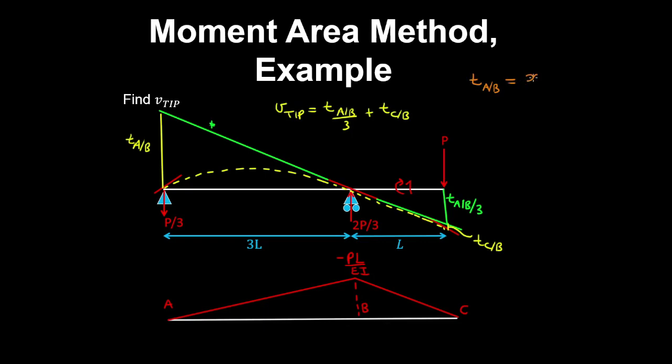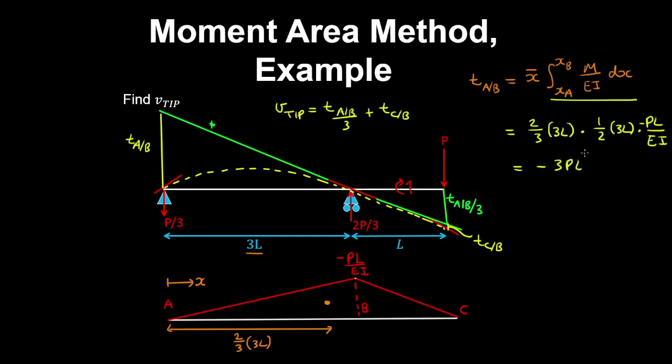So for example, a tangent at A relative to B is equal to the centroid by the integral from XA to XB of the curvature M on EI with respect to X. So if we take our origin on the left, then the centroid of this triangle is at 2 thirds by 3L. And the area under the curvature diagram is obtained using geometry. So we have X bar multiplied by half the base, which is 1 half by 3L by the height of this triangle, which is minus PL on EI. So that gives minus 3PL cubed on EI.